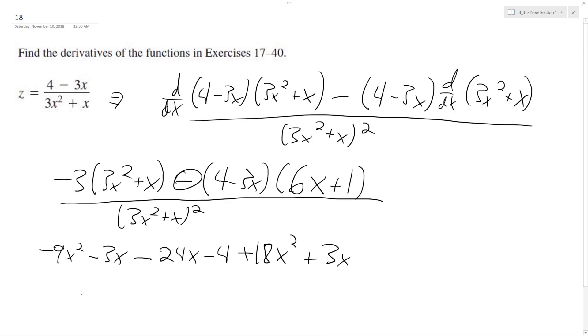And that's still all over 3x plus x squared. All this factors down, combining everything, our final z prime is equal to 9x squared minus 24x minus 4, all over quantity 3x squared plus x squared.